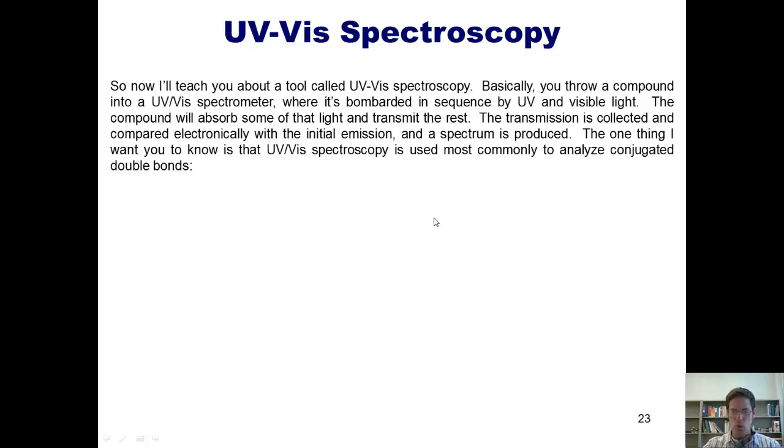So now I'll teach you about a tool called UV-Vis spectroscopy. Basically, you throw a compound into a UV-Vis spectrometer, where it's bombarded in sequence by UV and visible light. The compound will absorb some of that light and transmit the rest. The transmission is collected and compared electronically with the initial emission, and a spectrum is produced. The one thing that I want you to know is that UV-Vis spectroscopy is used most commonly to analyze conjugated double bonds. To remind you what that is, this is called an accumulated diene. That's where both double bonds are on the same carbon.